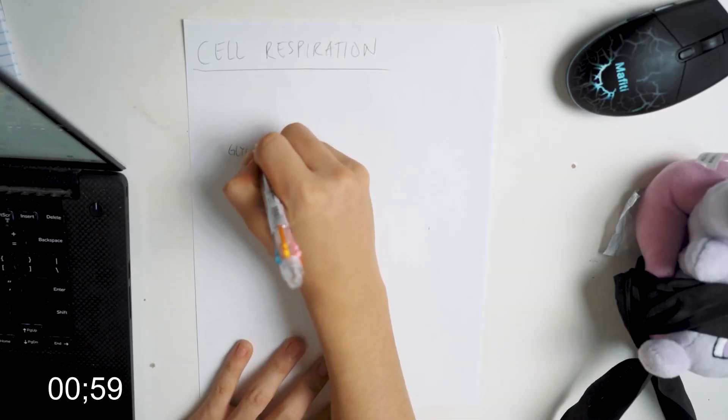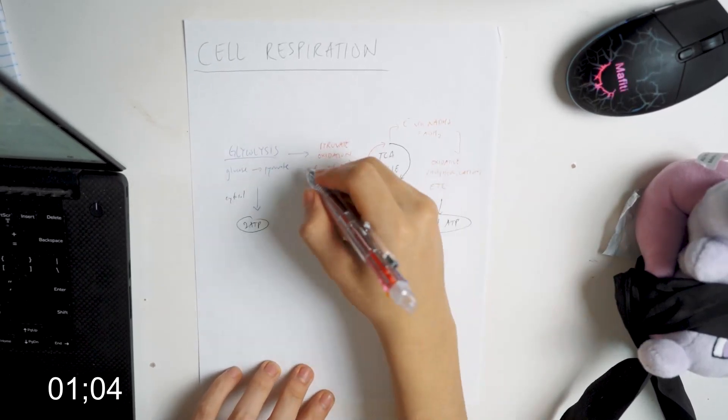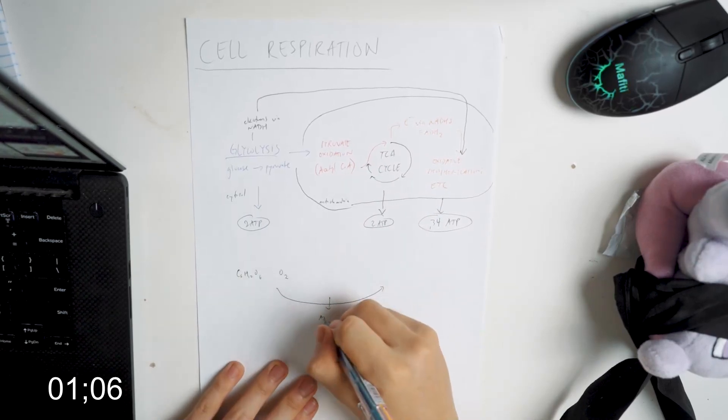For example, if you're learning cell respiration, I might copy down the diagram and maybe how it relates to a couple other metabolic pathways. And just keep this sheet separate from all your other sheets.